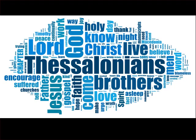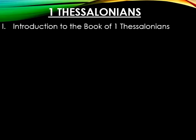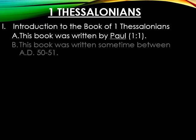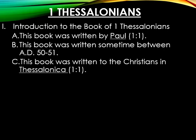Now that we've finished with the book of Colossians, let's move on to 1 Thessalonians. Roman numeral 1: the introduction. Letter A: this book was written by Paul, specifically mentioned in 1 Thessalonians 1 verse 1. Letter B: it was written sometime between AD 50 and 51, most likely shortly after Paul and Silas' arrival in Corinth on his second missionary journey. Letter C: it was written to the Christians in Thessalonica — known today as Thessaloniki. The main leadership of the church was probably Jewish, though the majority of the membership was of Gentile origin.